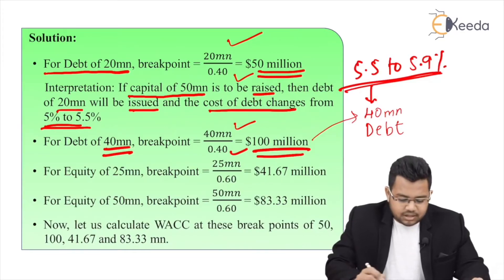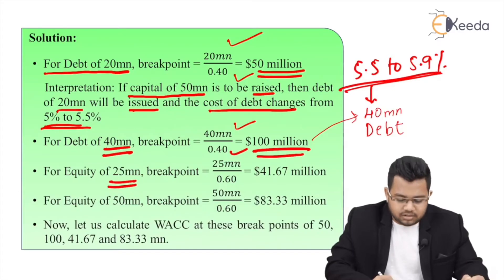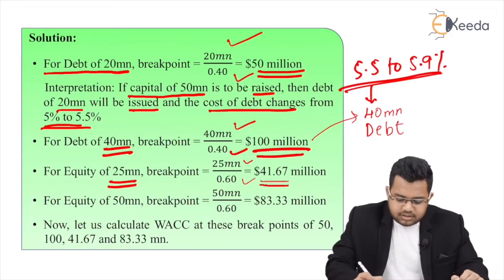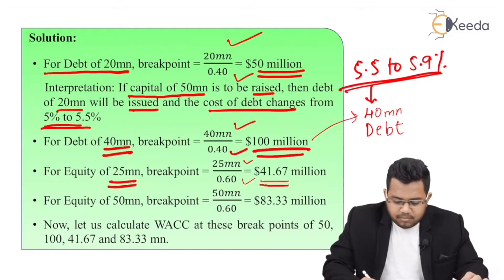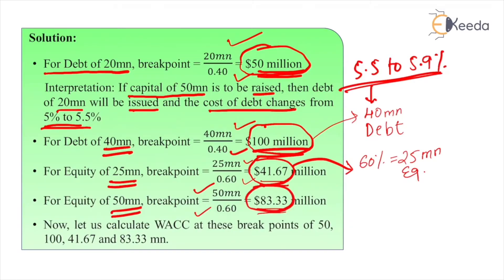Similarly, find breakpoints for equity. The cost of equity changes at 25 million. So: 25 divided by 0.6 — because equity ratio is 60% — gives 41.67 million. At 41.67 million total capital, 60% (which is 25 million) is raised through equity, and the cost of equity changes from 9% to 12.5%. For the next equity breakpoint: 50 divided by 0.6 equals 83.33 million. So we have four breakpoints: 41.67, 50, 83.33, and 100 million.